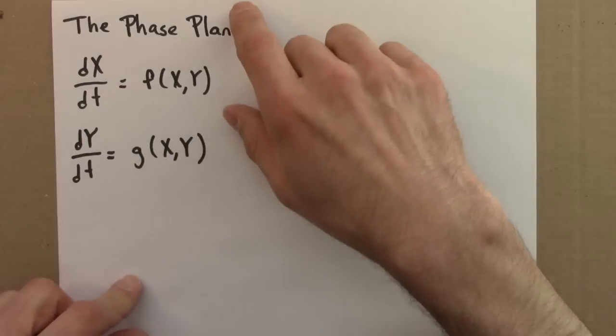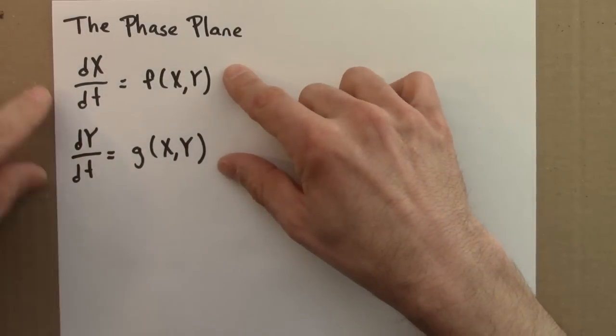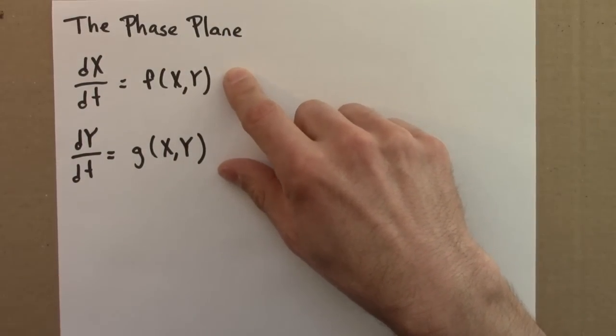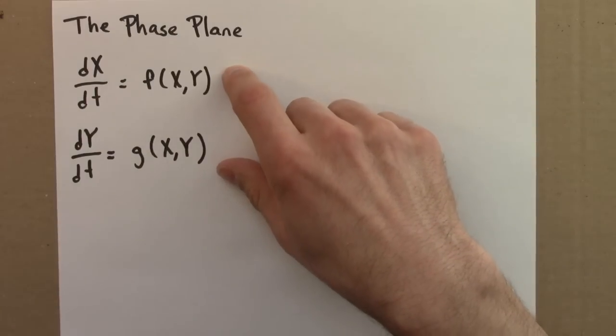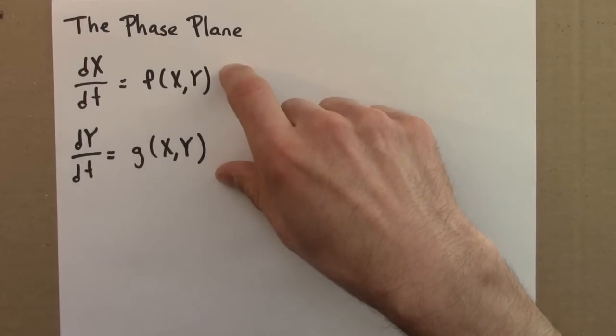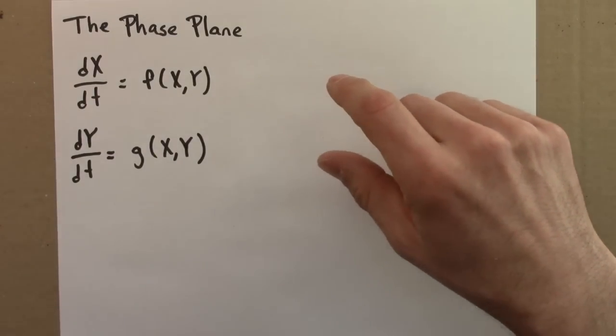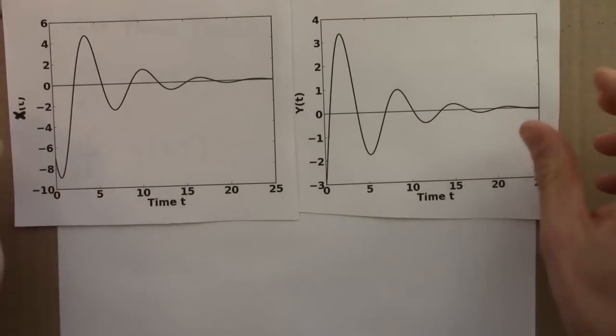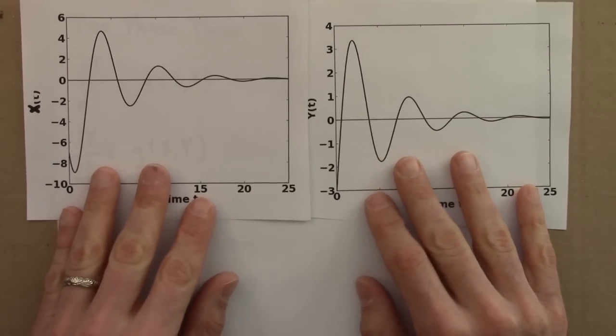So one can solve these equations, produce solutions using Euler's method or something like it. And then one gets two solution curves. Let me show an example of that. Here are two possible solution curves. And if you did the quiz, you've stared at these before.